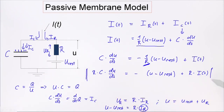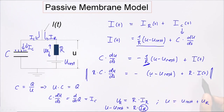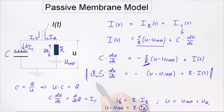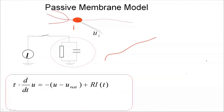Let's look at the units of this equation. The right-hand side has units of voltage. R times I, by Ohm's law, also has units of voltage. The left-hand side has voltage divided by time, so R times C together must have units of time. This is why I introduce the shorthand notation tau — the time constant of this differential equation. RC equals tau is the time constant of this RC circuit.